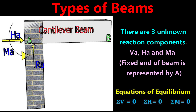The three unknown reaction components are: vertical direction VA, horizontal direction HA, and moment MA, considered at point A where the beam is fixed. The equilibrium equations used to find reaction forces in a cantilever beam are: summation of vertical forces equals zero, summation of horizontal forces equals zero, and summation of moments equals zero. Cantilever beams are commonly seen in car parking areas, bridges, and towers.